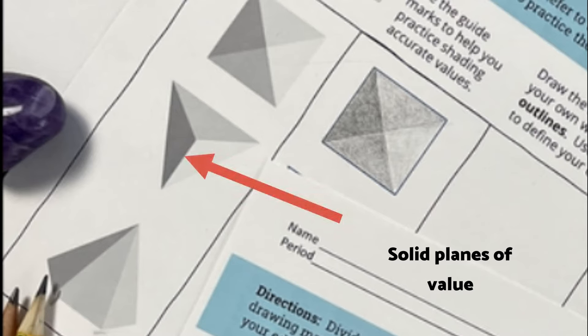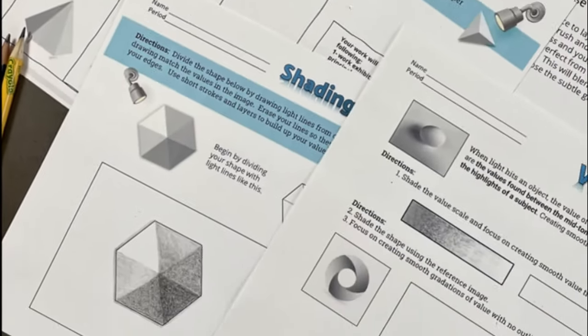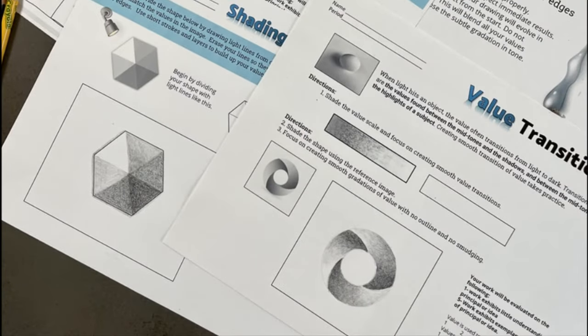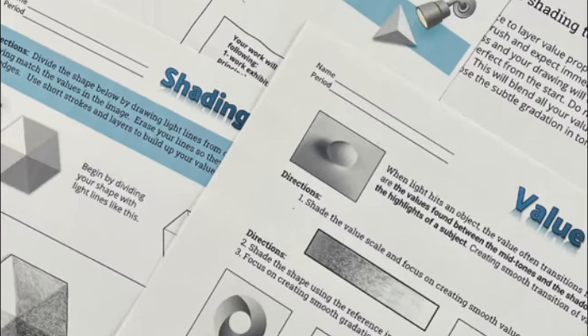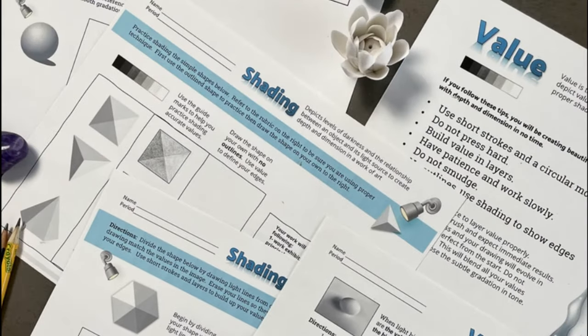Once we've worked with these simple shapes then we'll move on to some value transitions and learn how to get your values to fade from dark to light. And once you've done that then we can move on to some more complex forms.